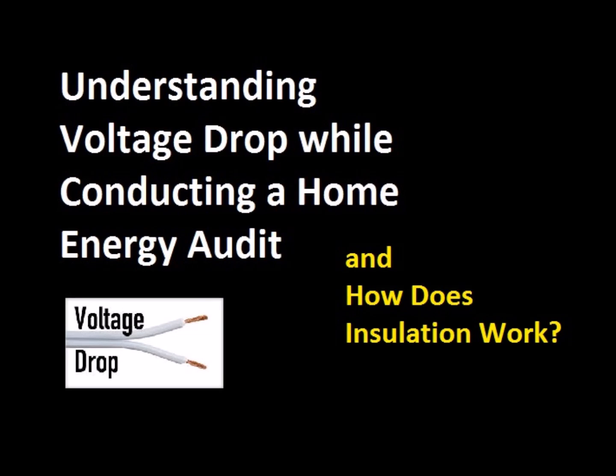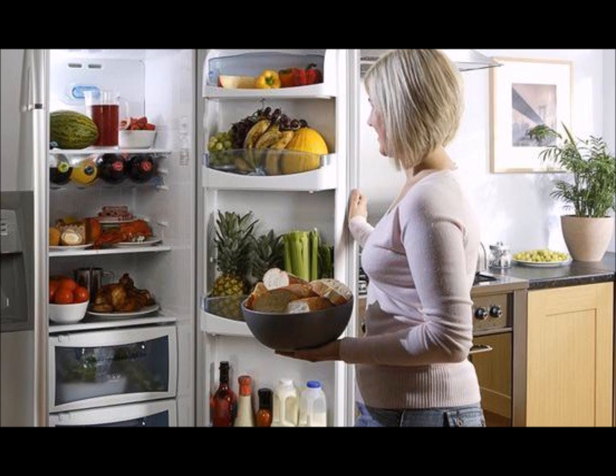Next, we talk about voltage drop. When conducting an energy audit, be sure to test the refrigerator circuit for any voltage drop. Find the electrical circuit associated with the refrigerator. Check it using a meter that puts a 15 amp load on the circuit for a short period of time and measures the voltage drop on it.